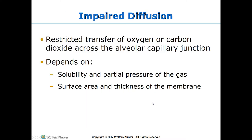Impaired diffusion is the restricted transfer of oxygen or carbon dioxide across the alveolar-capillary junction. It depends on the solubility and partial pressure of gases — low PaO2 means less diffusion. Reduced surface area from fewer alveolar walls, or a thickened membrane from any cause, will also produce impaired diffusion.